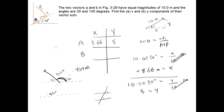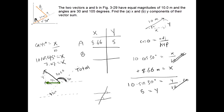We proceed similarly to find the components of vector B. It has an x component and a y component. Using cosine of 45 degrees equals the adjacent x component divided by the hypotenuse, which is also 10 meters. Solving gives 10 cosine 45 equals the x component, which is 7.07. However, note carefully that the x component of vector B points to the left, so it must be negative. We put negative 7.07 into the table.